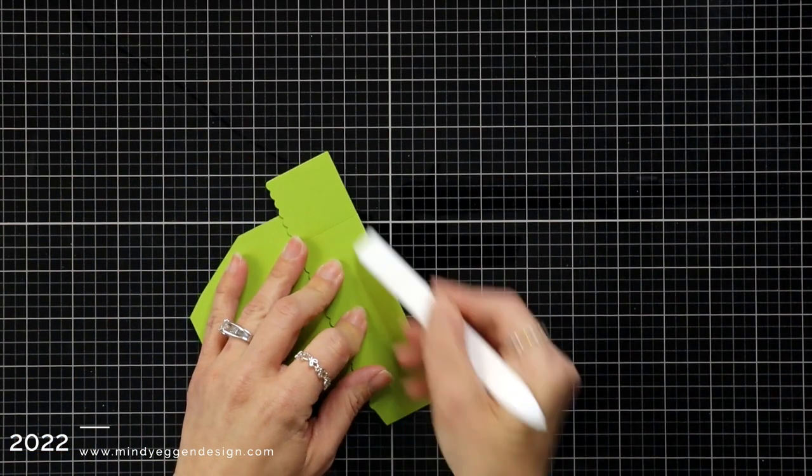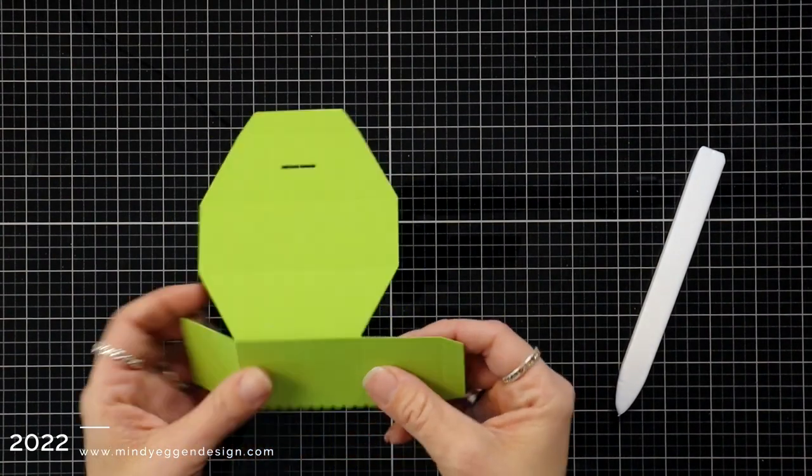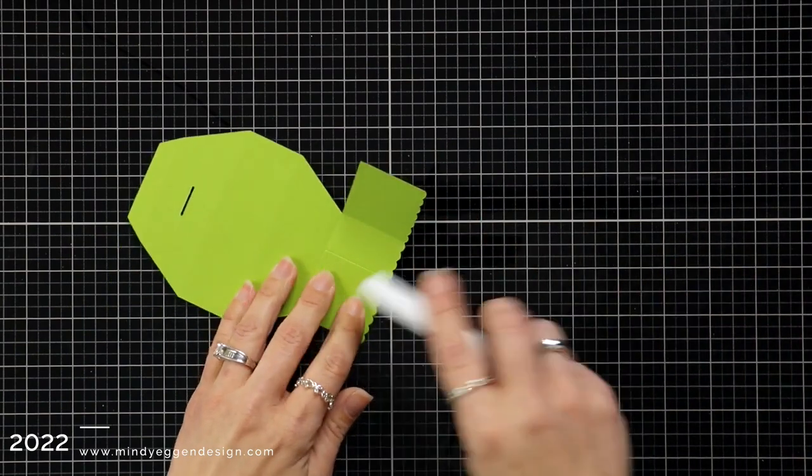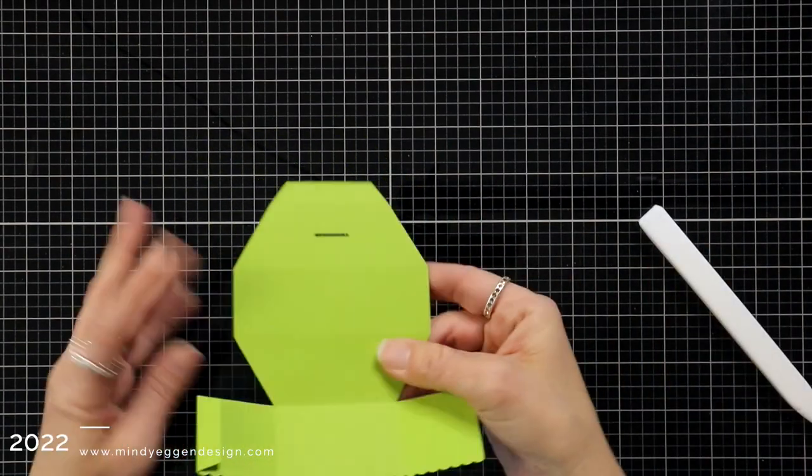This piece is your base piece. You need two pieces of this and it fits right in a six by six piece of cardstock or pattern paper.